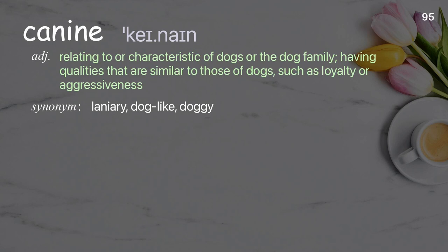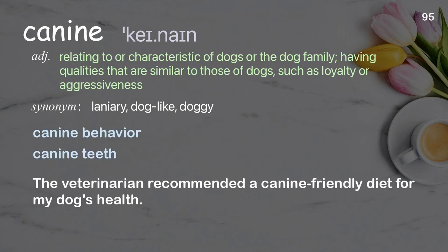Canine: Relating to or characteristic of dogs or the dog family; having qualities that are similar to those of dogs, such as loyalty or aggressiveness. Examples: Canine behavior. Canine teeth. The veterinarian recommended a canine-friendly diet for my dog's health.